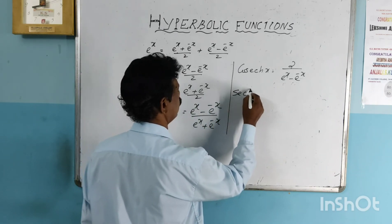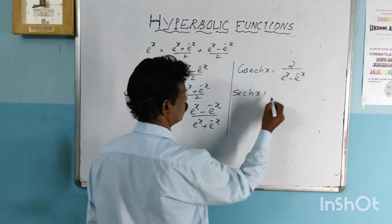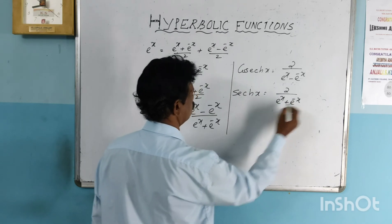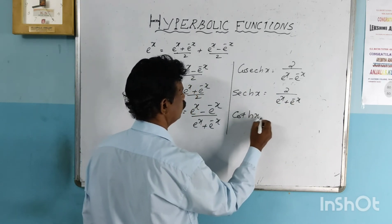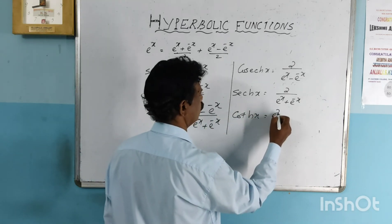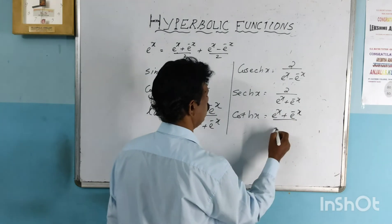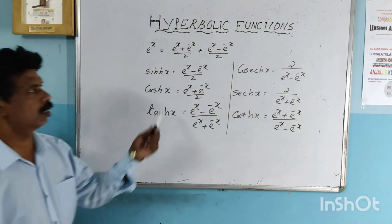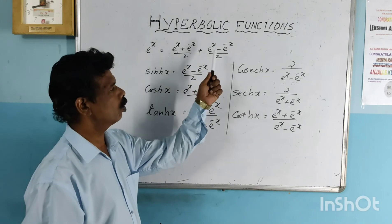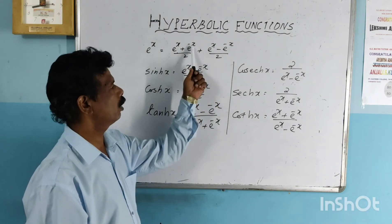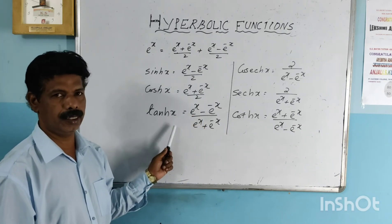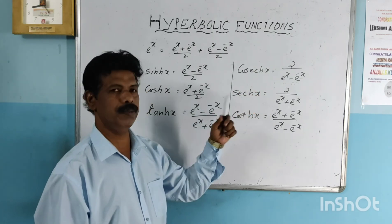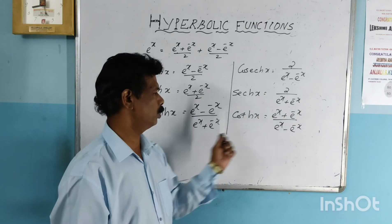Then sech(x) equals 2 divided by e raised to x plus e raised to minus x, which is the reciprocal of cosh(x). And coth(x) means the reciprocal of tanh(x), equal to e raised to x plus e raised to minus x divided by e raised to x minus e raised to minus x.